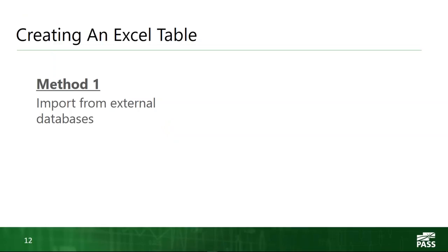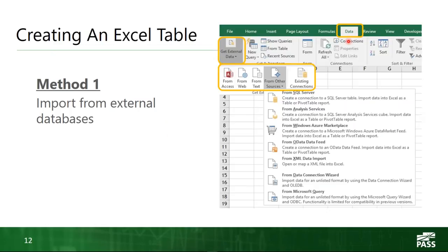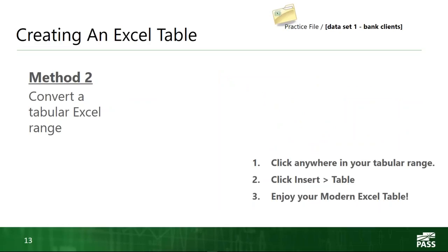The first method is probably the best one if you can get away with it: import from an external database. On your Excel ribbon you have this data tab, and in that data tab on the left you'll notice a Get External Data button. There's also something called New Query. I want to point out the myriad of external systems you can connect to directly from the Excel interface. When you connect to an external system, more often than not the destination format is going to be an Excel table — it happens automatically when you set up this import functionality.